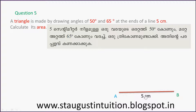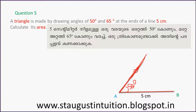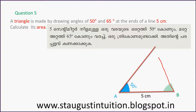The angle at A is equal to 50 degrees. And at the other end, the angle is 65 degrees. So the two base angles of the triangle are 50 degrees and 65 degrees.